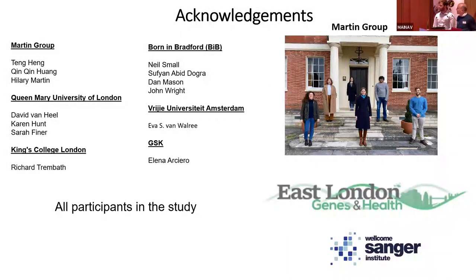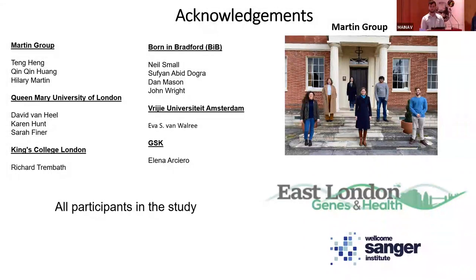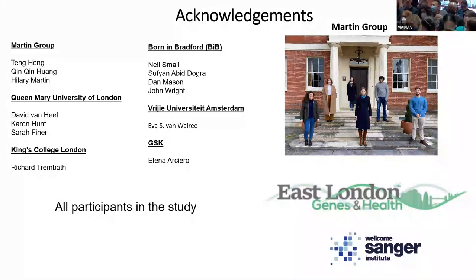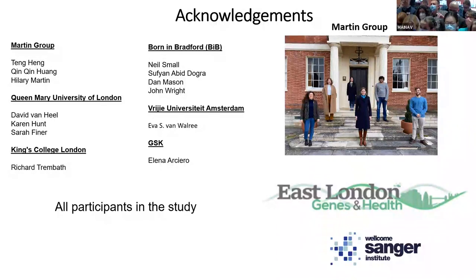Thank you very much. Questions? The first questioner asks about autozygosity using runs of homozygosity versus just looking at global homozygosity across the genome, noting that there are simple relationships from Hardy-Weinberg equilibrium and F statistics. They ask whether ROH adds additional power or potentially overcomplicates things.